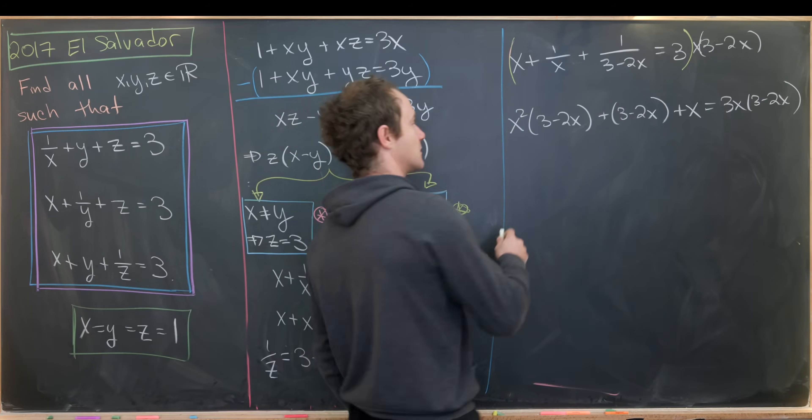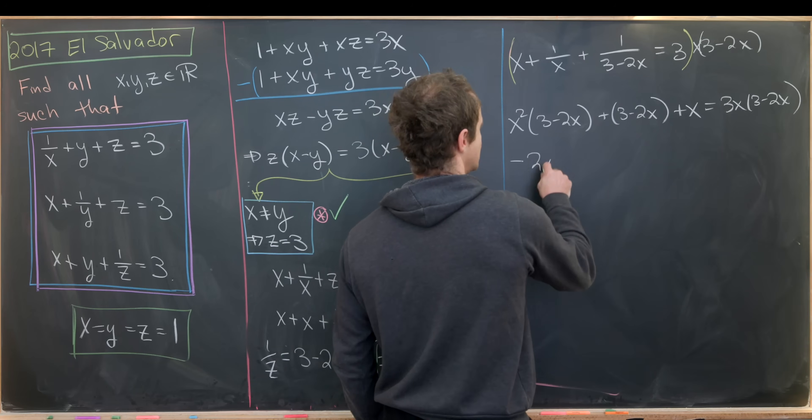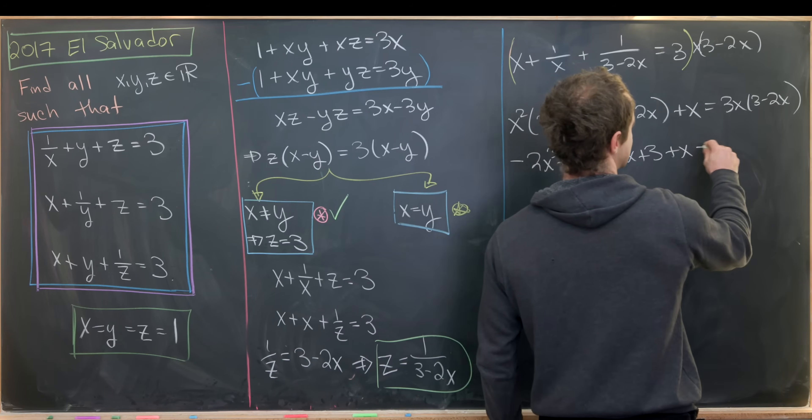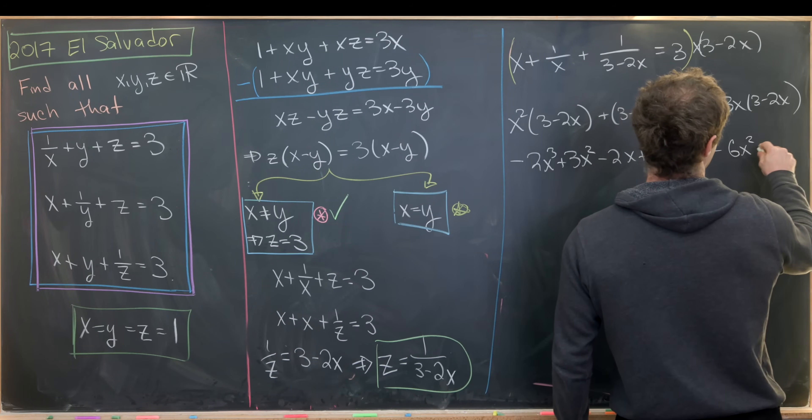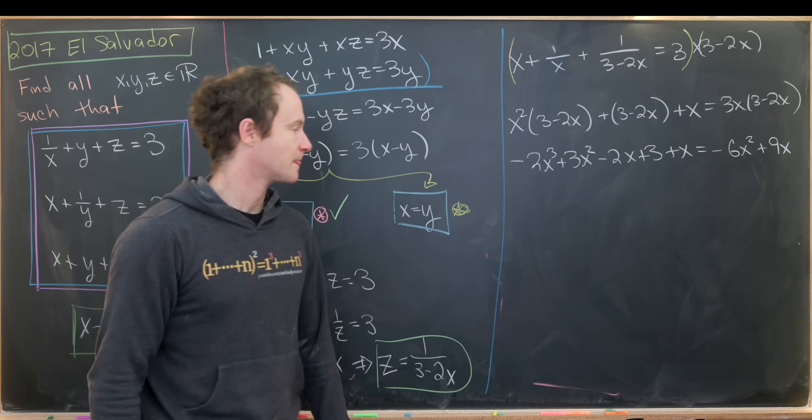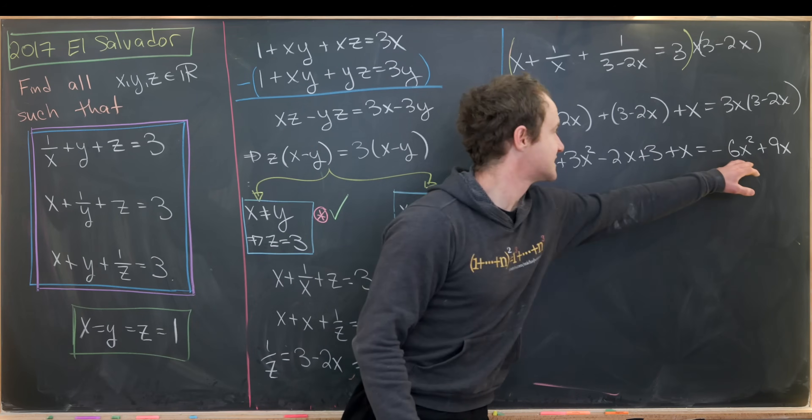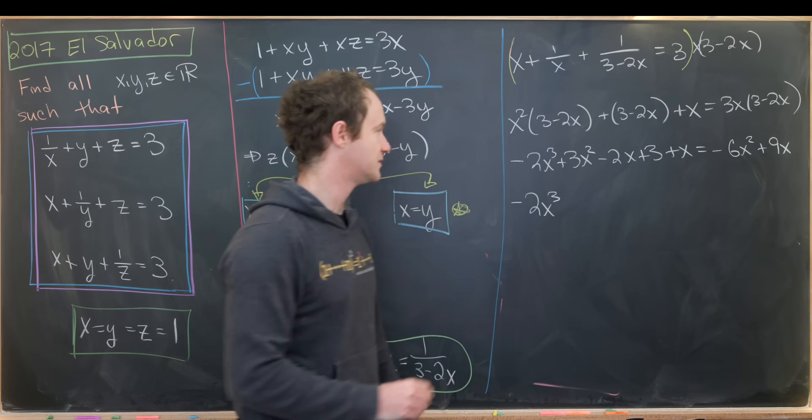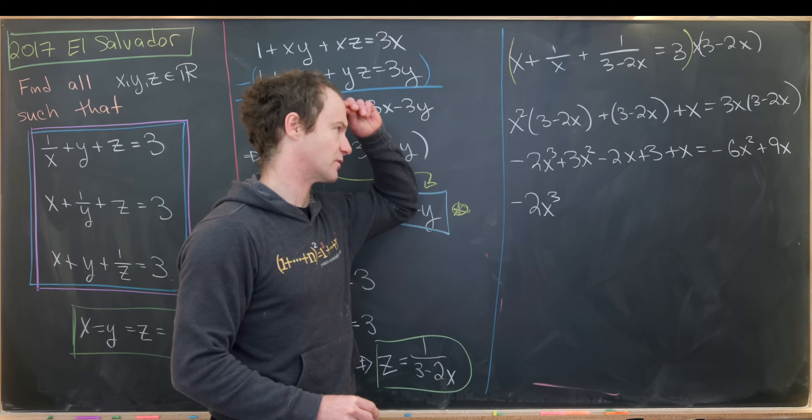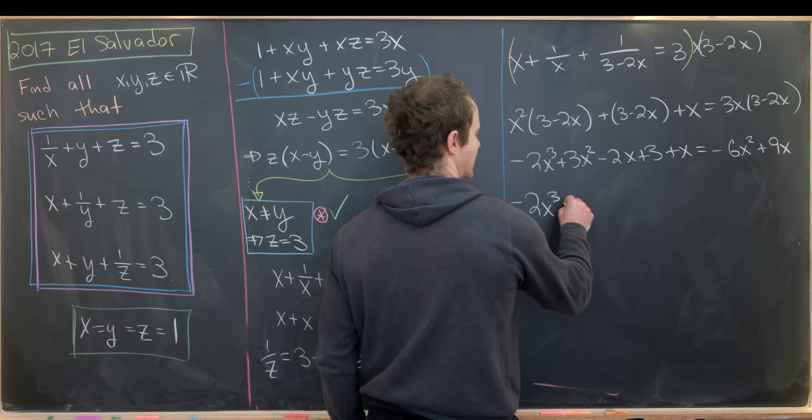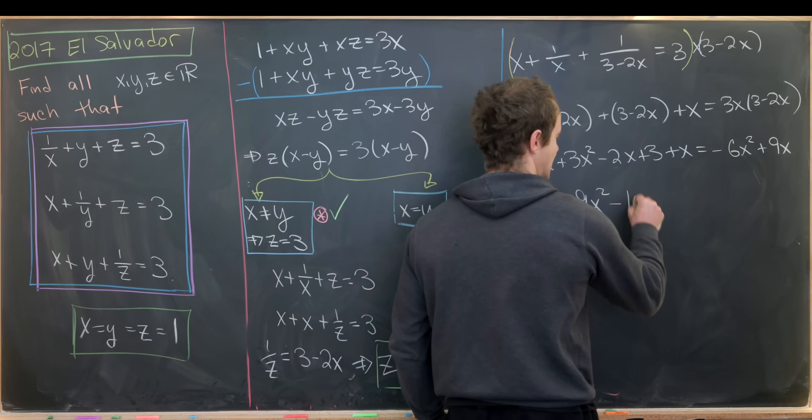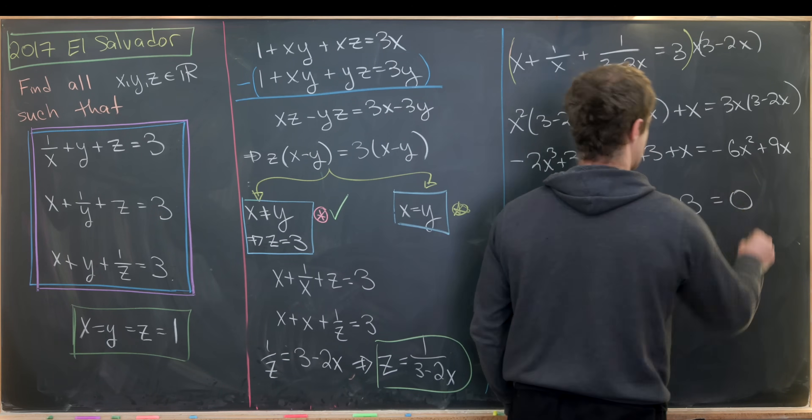Now we need to expand some things out. We'll have minus 2x cubed plus 3x squared minus 2x plus 3 plus x equals minus 6x squared plus 9x. Let's move everything around, so we'll have minus 2x cubed. Then our x squared term will be plus 9x squared, and then we'll have a minus 2x plus x, that'll be minus 1x, and then subtracting 9x will have minus 10x, and then finally plus 3 equals 0.